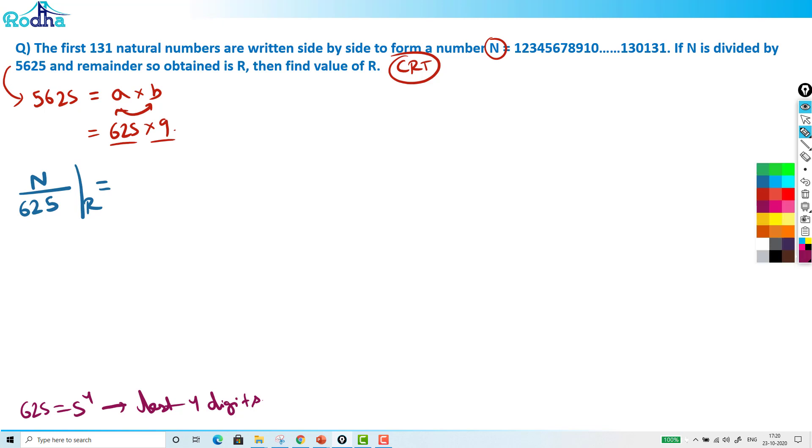Now if it is 625, so what I can actually do here now, what are the last 4 digits here? 0, 1, 3, 1. So last 4 digits of the number is 0131. So 0131 upon 625, remainder remains 625. That means remainder is 131. So N by 625, remainder is 131.